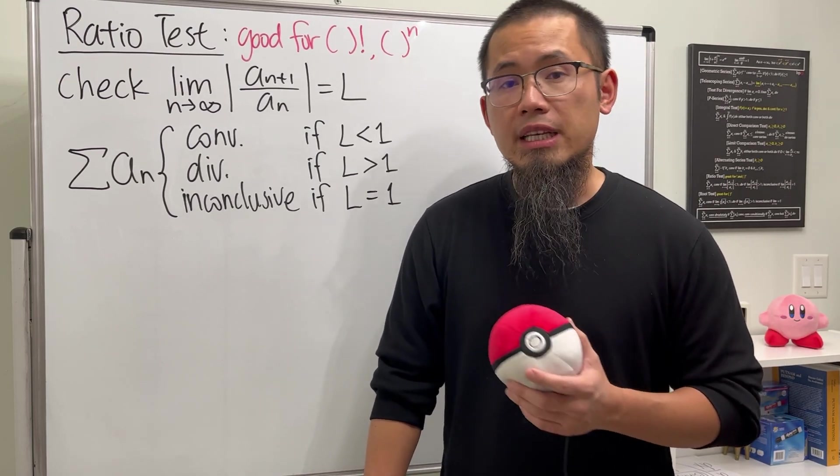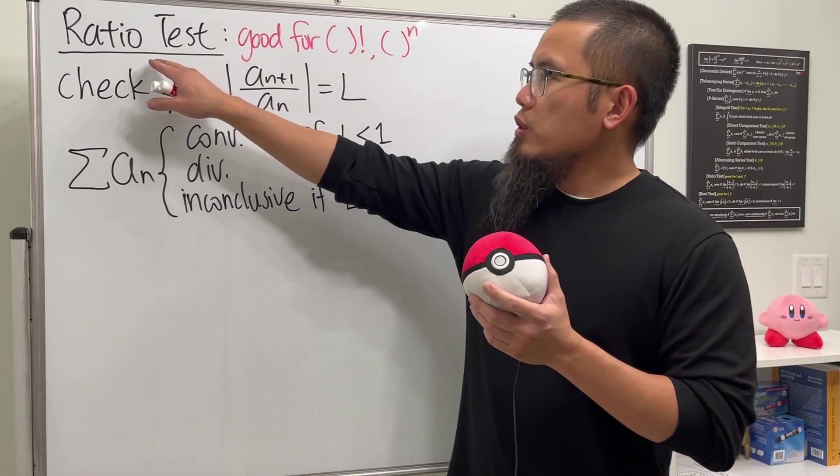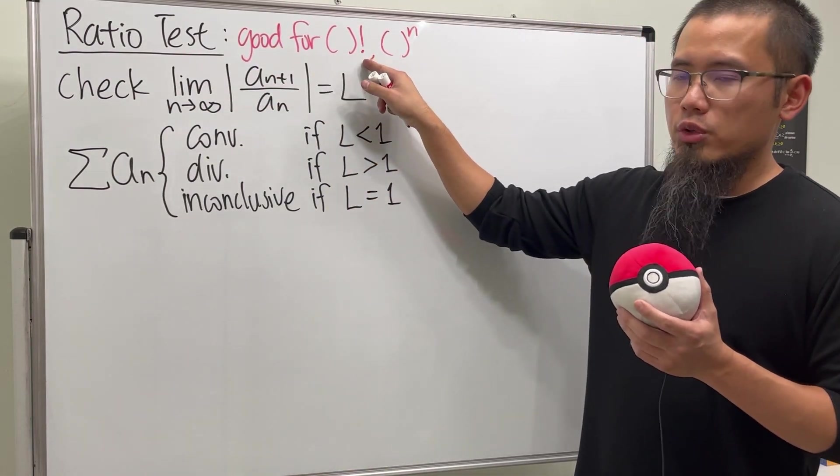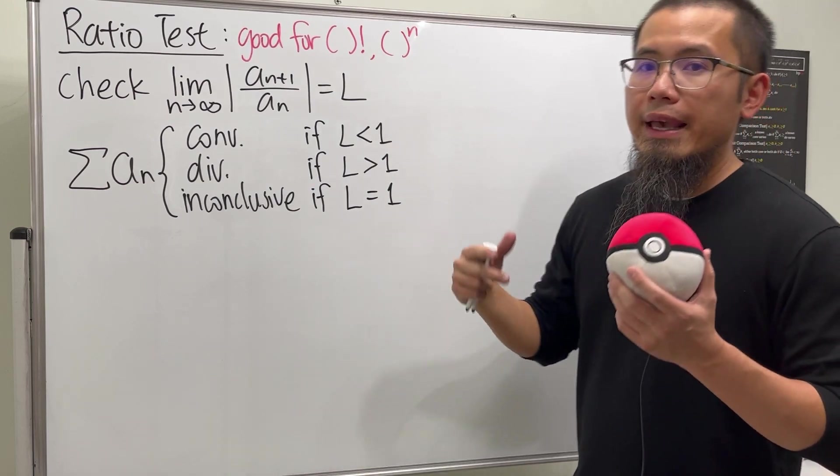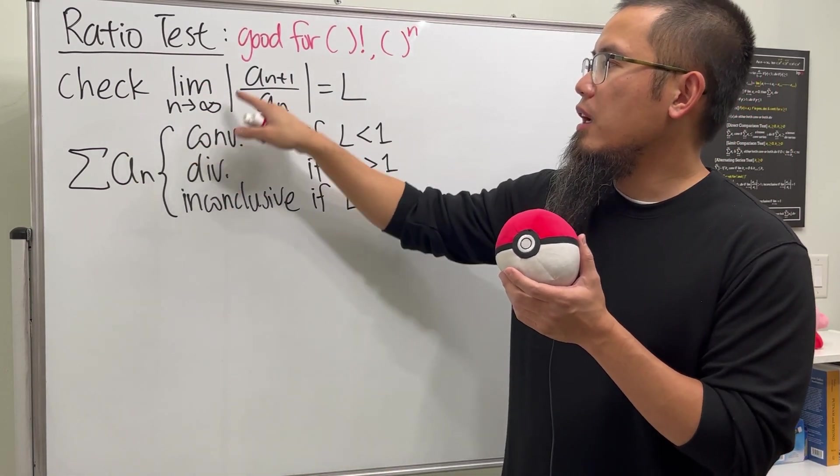How come we cannot use the ratio test if L is equal to 1? Well, check this out. The ratio test, which is good for when you see factorial or maybe n in the exponent, says that we will have to first check the limit as n goes to infinity.